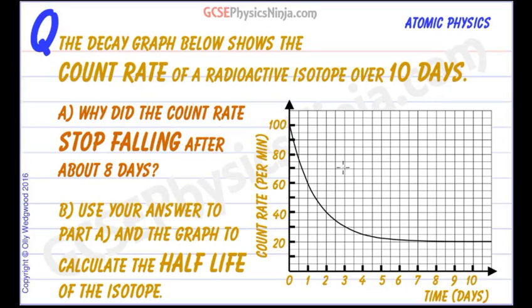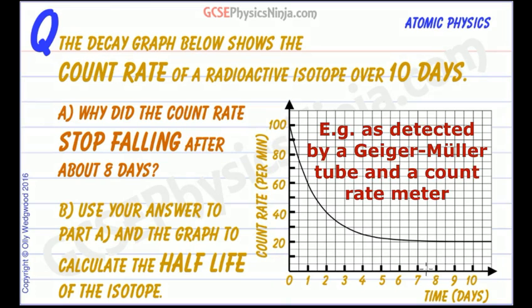This decay graph shows the count rate of a radioactive isotope as it decays over 10 days. We measure count rate in counts per minute on the vertical axis and time in days on the horizontal axis.